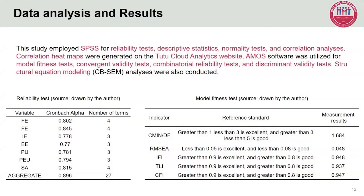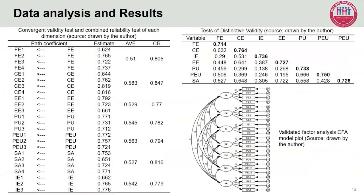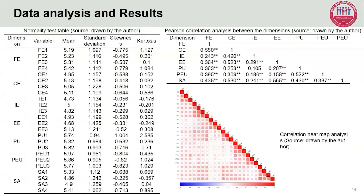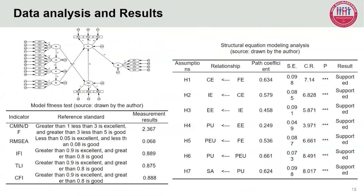We have achieved a high level of confidence and our model's fitness is excellent. The convergent validity and combined reliability tests were met, and the differential validity tests were also met. The CFA model for validated factor analysis is shown. The mean value of each variable in the normality test is between 4.68 and 5.97, indicating subjects' knowledge of the research topic is in the middle to upper range. All correlation coefficients are greater than zero and positively correlated.